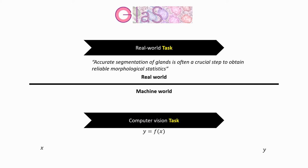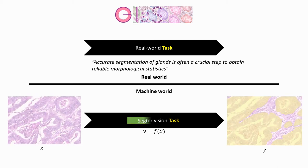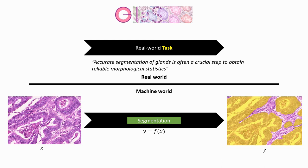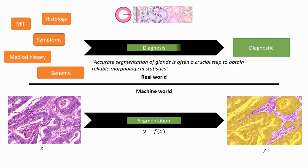Another example from the medical field is the GlaS, or Gland Segmentation Challenge. The task being evaluated is, as the name suggests, gland segmentation, with inputs being microscopy images and desired outputs a mask encoding which pixels are part of a gland. Again, this is not a real-world task by itself. To quote the GlaS Challenge website, this segmentation is a crucial step in the process that human doctors use. The real-world task involves taking information from multiple sources — image-based or not — and compiling them to form diagnostics.